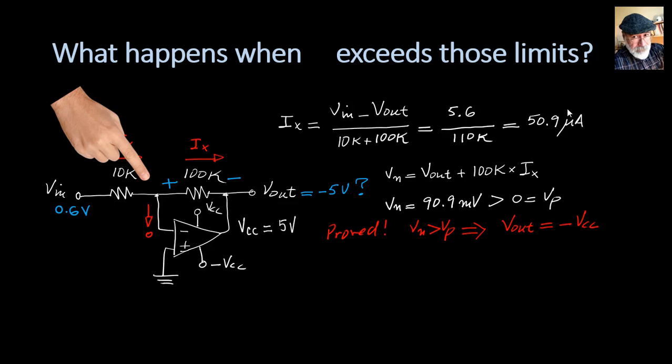And that is, Vn is indeed higher than Vp, and we have proven that the op-amp is negatively saturated. The amplifier is negatively saturated, and Vout is indeed negative Vcc, negative 5 volts in our case.